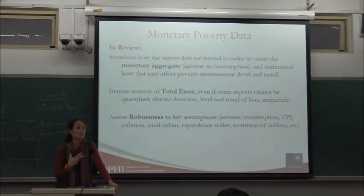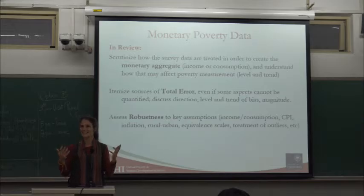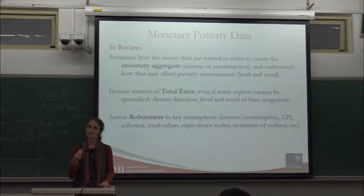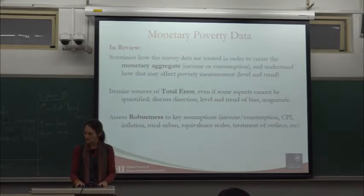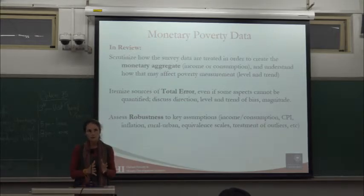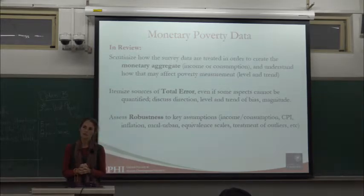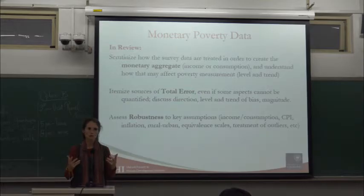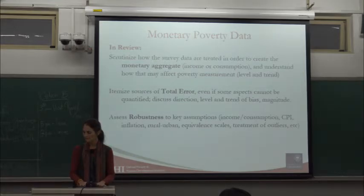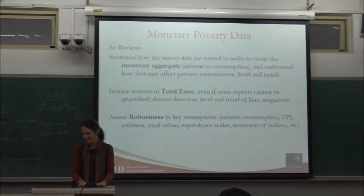For example, improving coverage of missing populations — the homeless, the institutionalized in hospitals and orphanages — they are excluded from all of our surveys and are defined out of poverty. Bringing these issues to mind helps the community focused on data collection think of ways to gather data on missing populations. And always assess the robustness of measures to different definitions of the consumer price index, different ways of computing domestic inflation, rural and urban prices. These are already done in many academic studies but not necessarily in official reports.